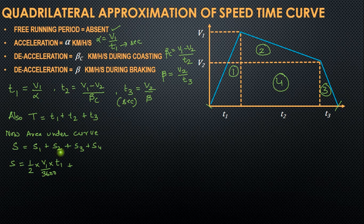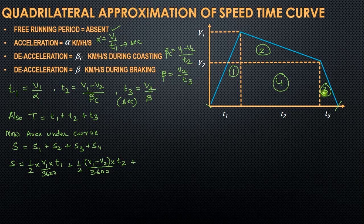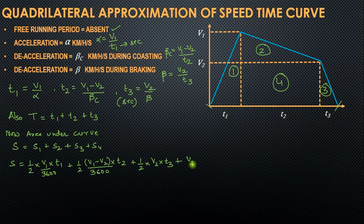The area of triangle S2 = ½ × (V1 − V2) × T2 / 3600, since T2 is in seconds and (V1 − V2) is in km/h. S3, the area of the third triangle, has perpendicular V2 and time T3, so S3 = ½ × V2 × T3 / 3600. The area of rectangle S4 has length V2 and breadth T2, so S4 = V2 × T2 / 3600. T2 is in seconds and V2 is in km/h, so again we divide by 3600.